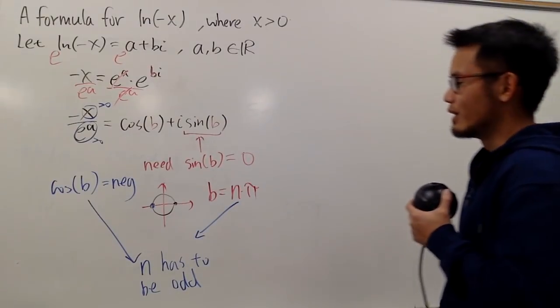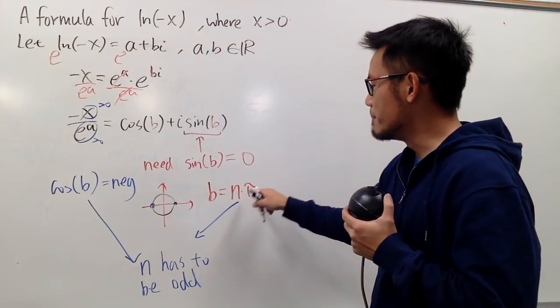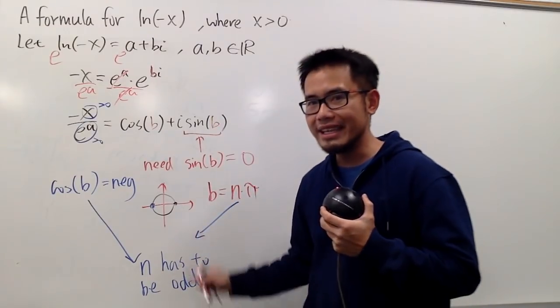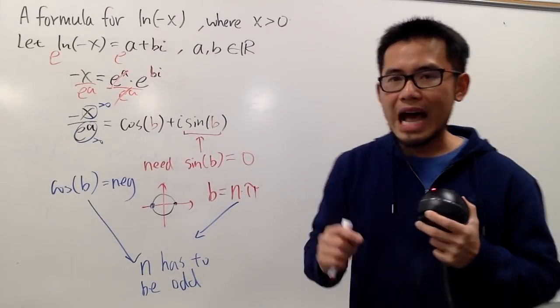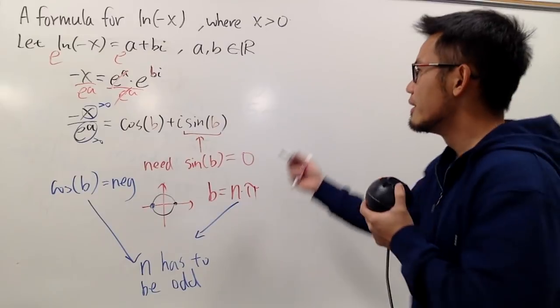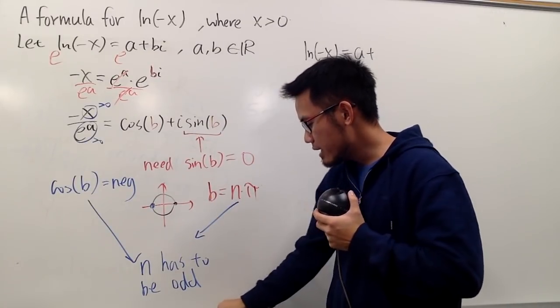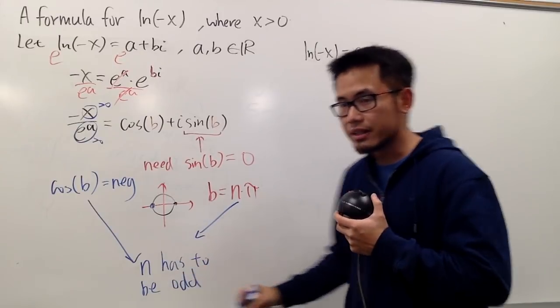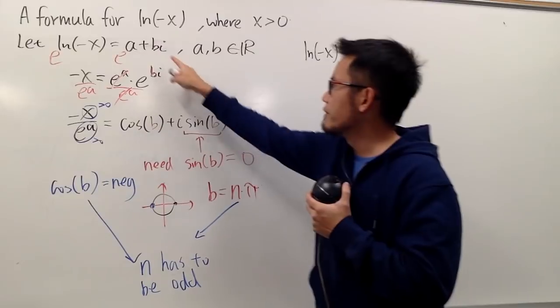Okay, so, we have this right here. b is just n pi, where n is an odd integer. And now, what? Help us, right here. Now, we have to figure out what a is. Okay, now, let's just look at this again. b we know already, which is n pi, and we keep in mind, n is odd. So, we'll just put down n pi, and we have the i right here. So, we have n pi i.